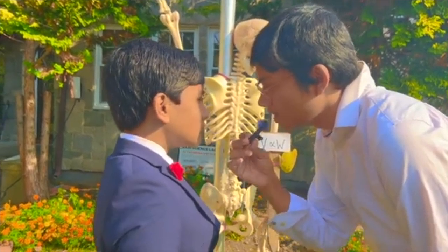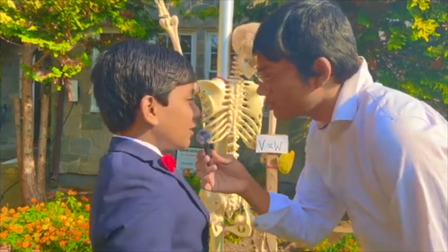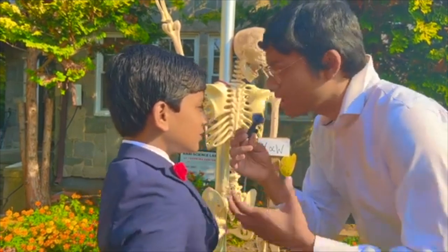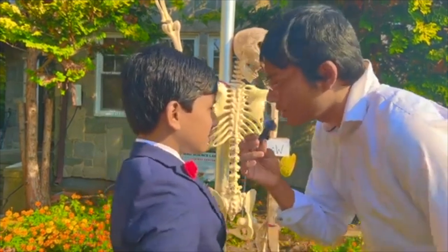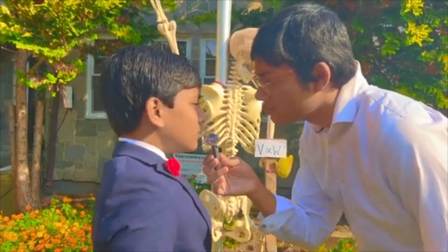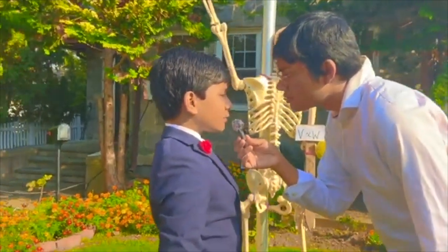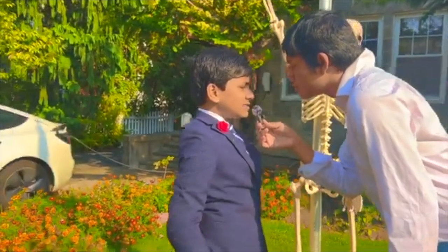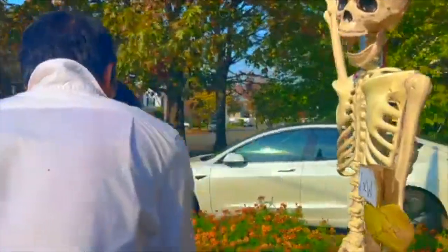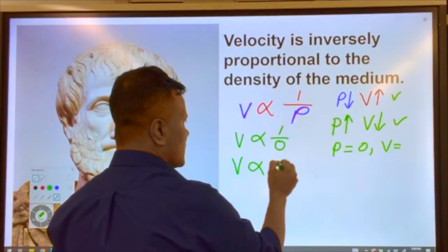Was Aristotle correct? No — even though his math seemingly works on Earth, let me show you an example outside of Earth. The moon has no atmosphere, so it has zero density. But Aristotle says velocity is inversely proportional to density — as density decreases, velocity should increase massively. Near zero density means the moon should be moving at nearly infinite speed. Velocity proportional to 1/0 means velocity equals infinity, because 1/0 is infinity.